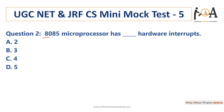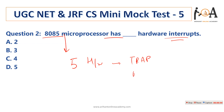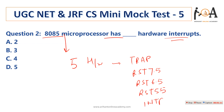The next question is: how many hardware interrupts does the 8085 microprocessor have? The 8085 microprocessor has 5 hardware interrupts. They are: TRAP, RST 7.5, RST 6.5, RST 5.5, and INTR. So these are the 5 hardware interrupts in the 8085 microprocessor.